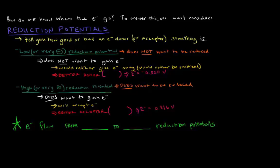If you have a low or very negative reduction potential, that means that particular species does not want to be reduced — it does not want to gain electrons. So instead it would rather give electrons away, meaning it would rather be oxidized. If something has a relatively low reduction potential, it's going to be a better electron donor.